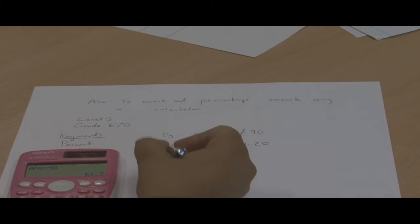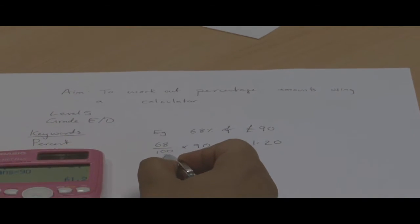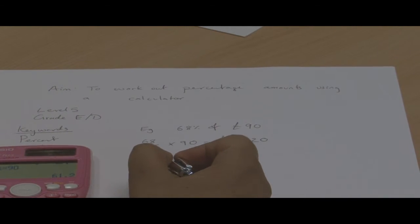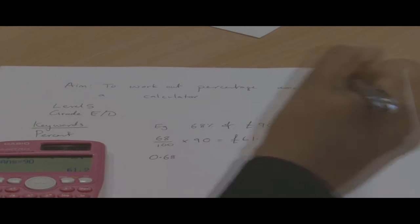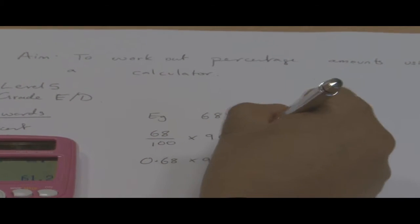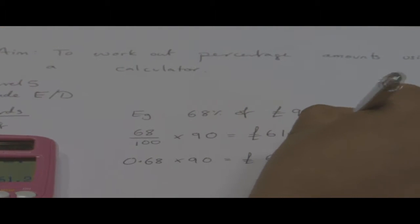Now this bit here, when we're putting it over 100, that's basically changing it to a decimal. So that is actually 0.68 times by 90, gives our £61.20.